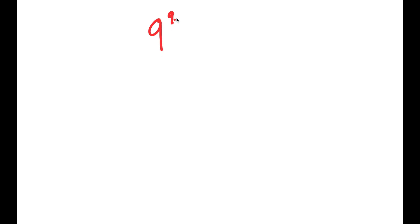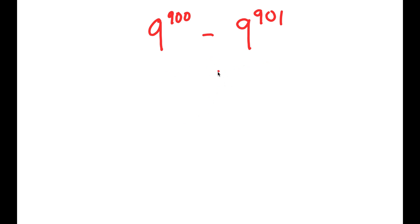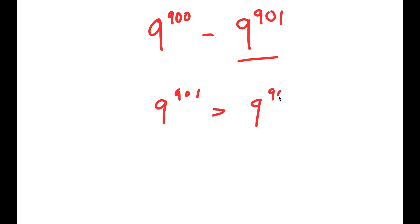In this video, I'm going to solve the problem 9 to the power of 900 minus 9 to the power of 901. We already know before even solving the problem that the value of this is going to be negative, because 9 to the power of 901 is greater than 9 to the power of 900.